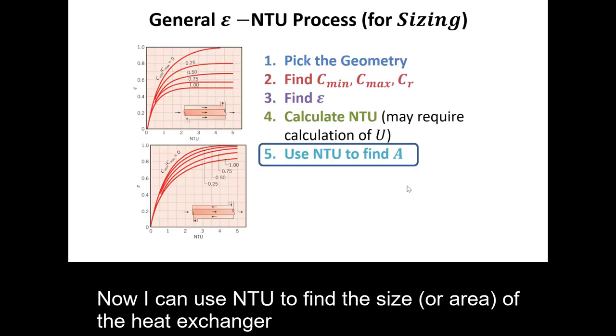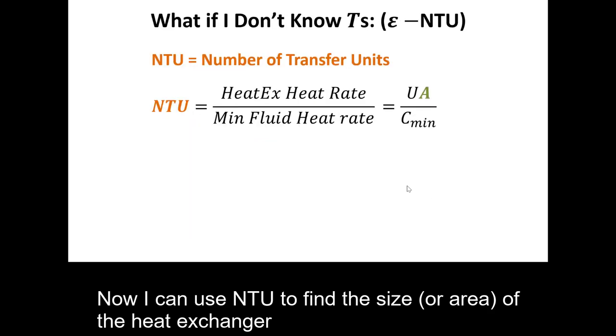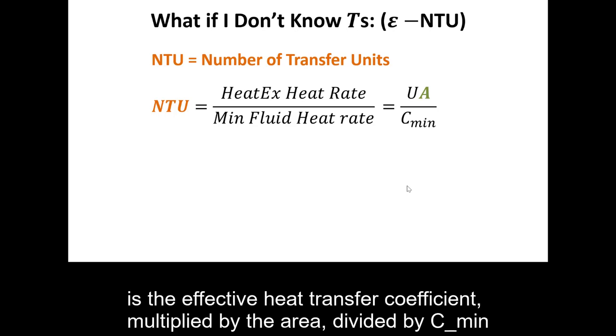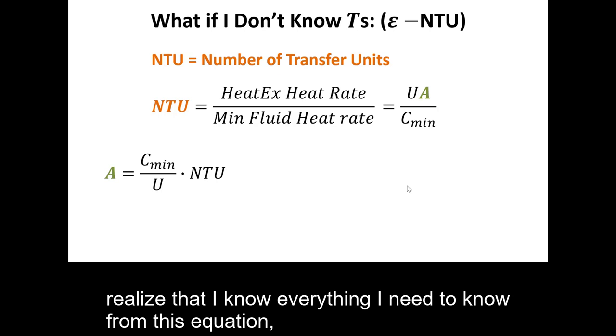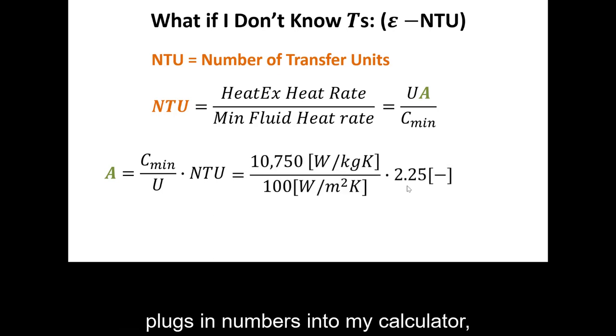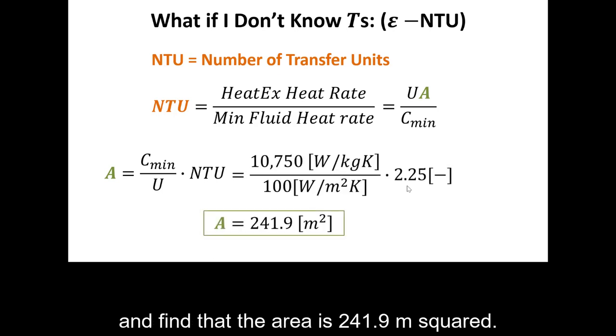Now, I can use NTU to find the size or area of the heat exchanger. The definition of NTU is the effective heat transfer coefficient multiplied by the area divided by C min. I can rearrange for the area, realize that I know everything I need to know from this equation, plug some numbers into my calculator, and find that the area is 241.9 meters squared.